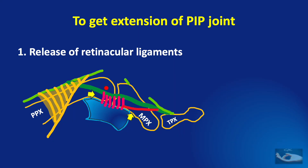Release of the retinacular ligaments refers to complete division of the transverse retinacular ligament, which is seen as fibrous tissue between the lateral bands that have slipped volarward and the fibrous flexor sheath. The oblique retinacular ligament must also be divided to completely release the lateral bands.